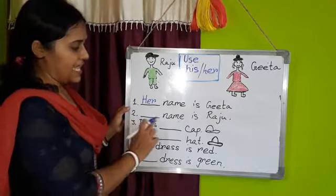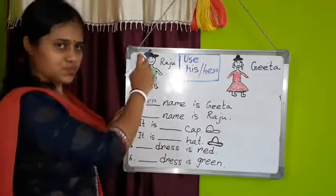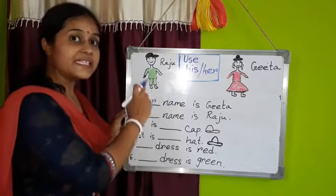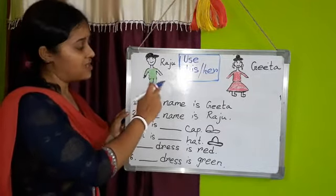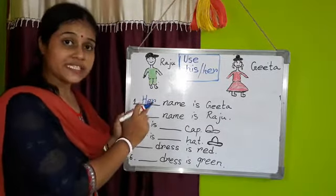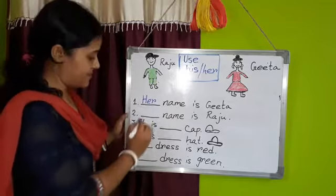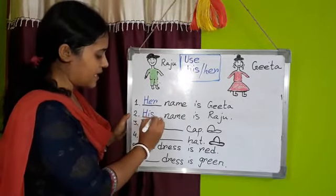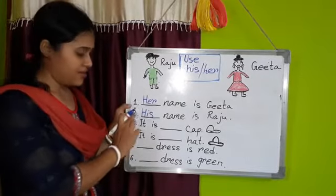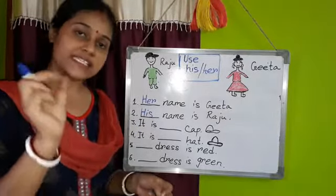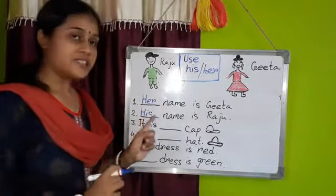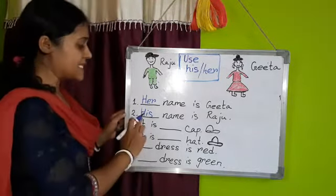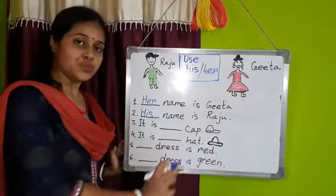Number two. His name is Raju. Whose name is Raju? His name is Raju. Raju is a boy, so we have to use his here. We also start here with H as a capital, because this is the starting of the sentence — the first letter must be capital. His name is Raju.